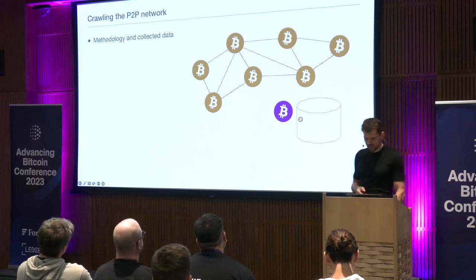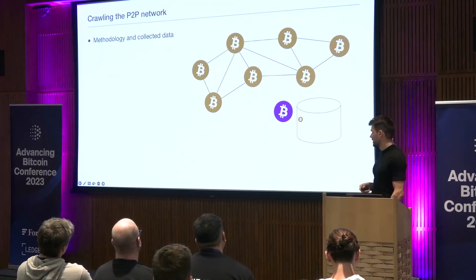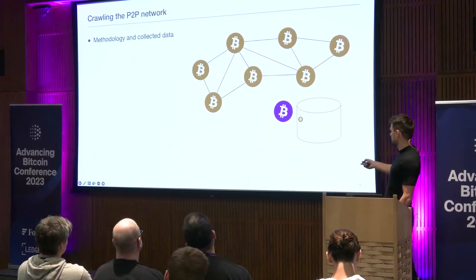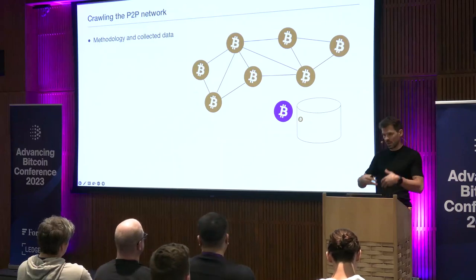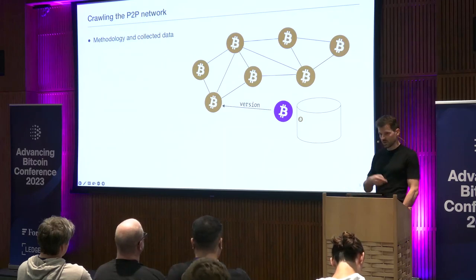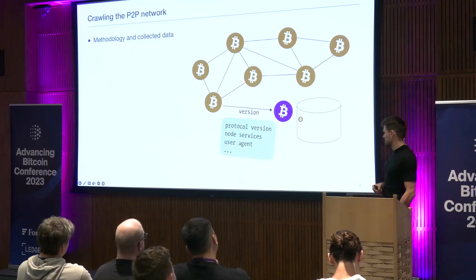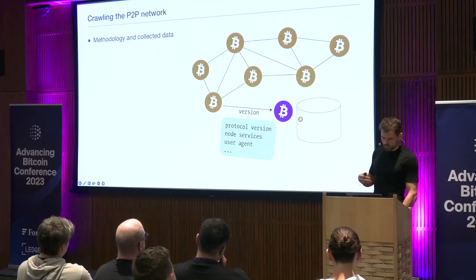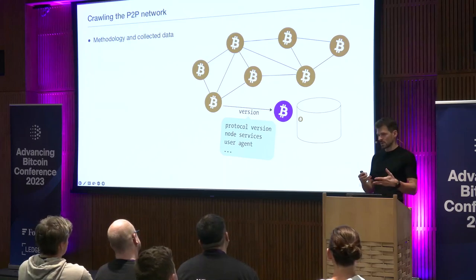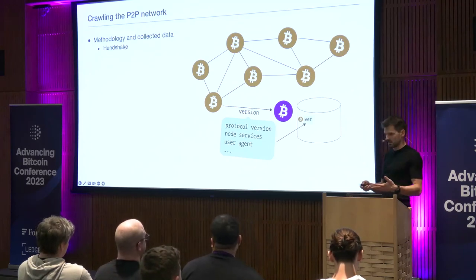Let's come to the more interesting part — the Bitcoin P2P network. I'd like to begin by sharing the methodology I used for collecting data. Our crawler first obtains addresses from DNS seeds. It then performs a handshake with each node by sending a version message and receiving one back. The version message contains things like what protocol version is running, what node services are available, whether it's a full or pruned node, and what user agent is running. All of this gets stored in our crawler database.